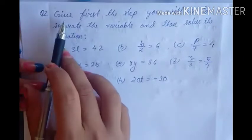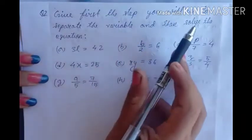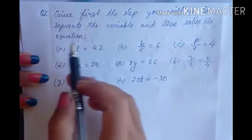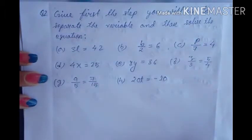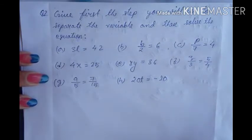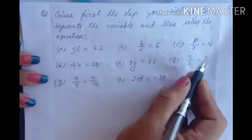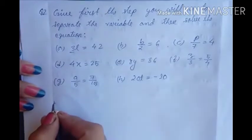Now come to question number 2. Again we have to separate the variable and then solve the equation. In question number 1 only addition and subtraction were there, but here you can see multiplication and division are also there. No need to worry — it is also very simple.